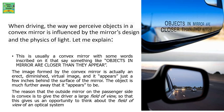When driving, the way we perceive objects in the convex mirror is influenced by the mirror's design and the physics of light. This is usually a convex mirror with words inscribed on it that say something like 'objects in mirror are closer than they appear.' The image formed by the convex mirror is actually an erect, diminished, virtual image.